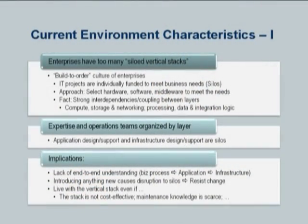Enterprise IT is managed in horizontal layers — infrastructure management, application support, business process automation, business process outsourcing — all horizontal layers. Although we have vertically integrated stacks, we also have horizontally distributed capabilities and teams. As a result, there is very little understanding that crosses these layers. People who run infrastructure often don't ask why they are doing what they are doing.